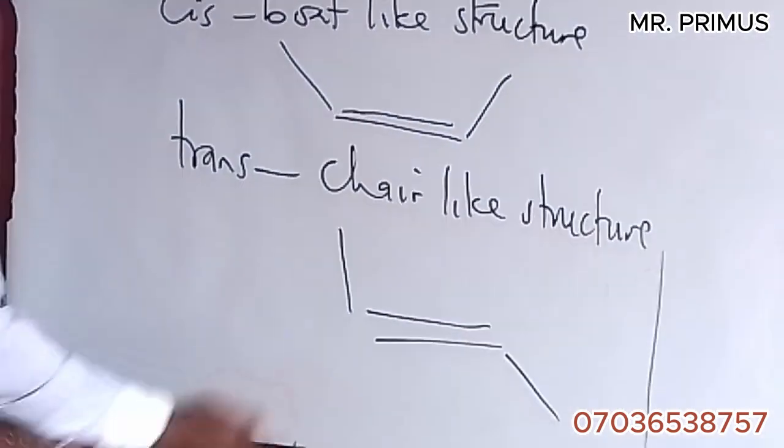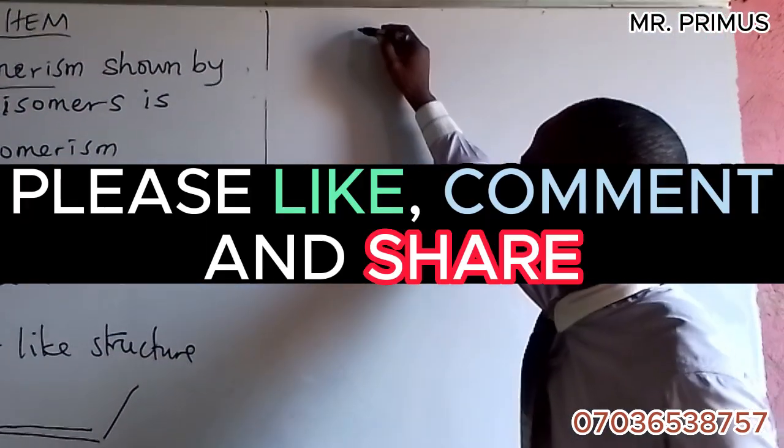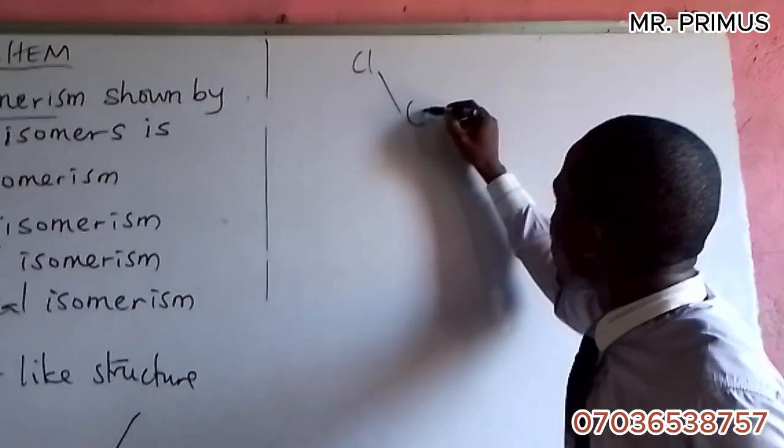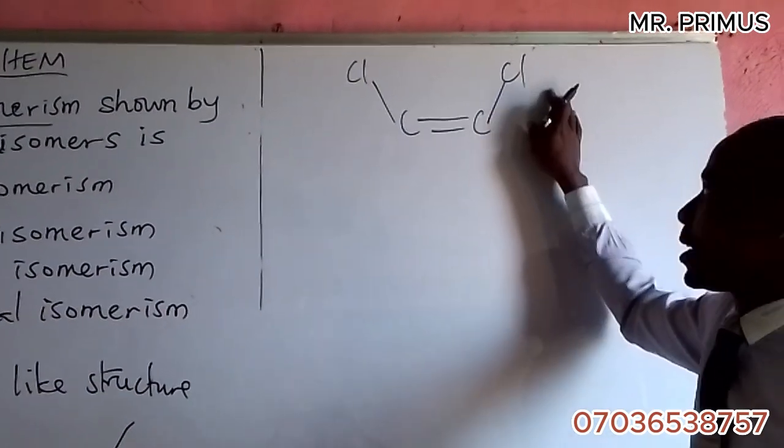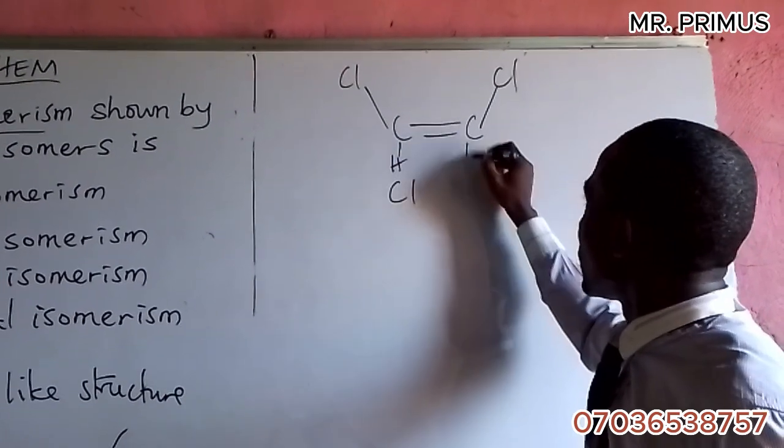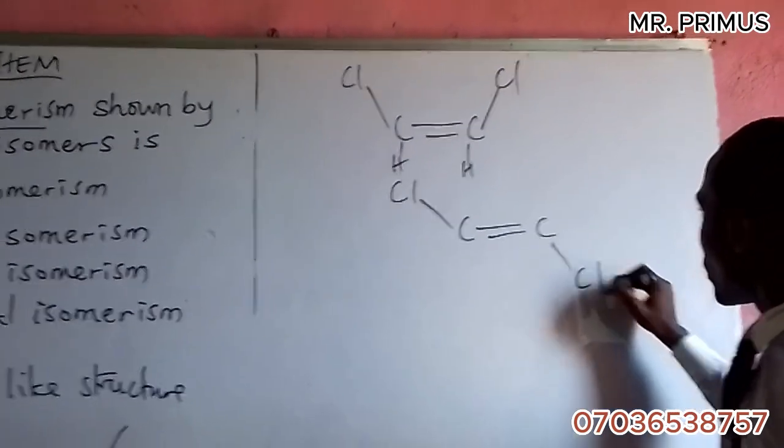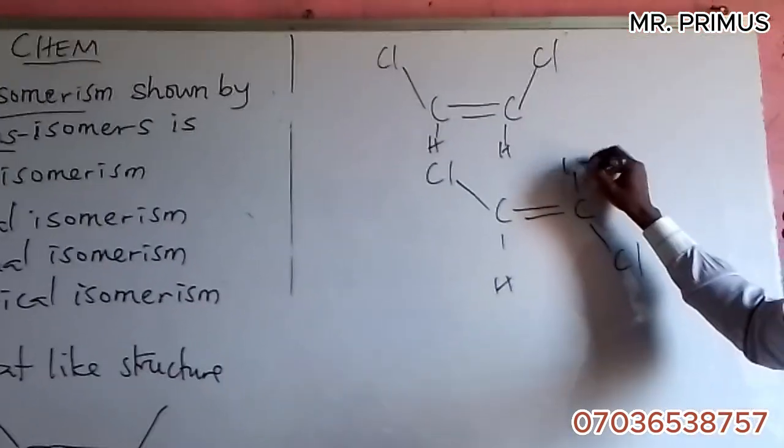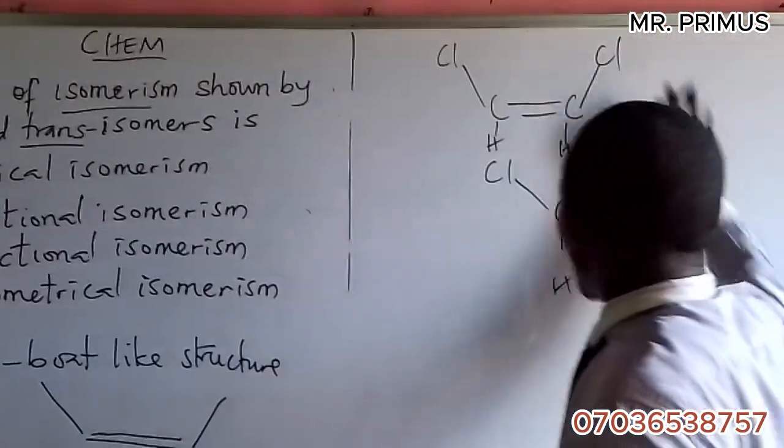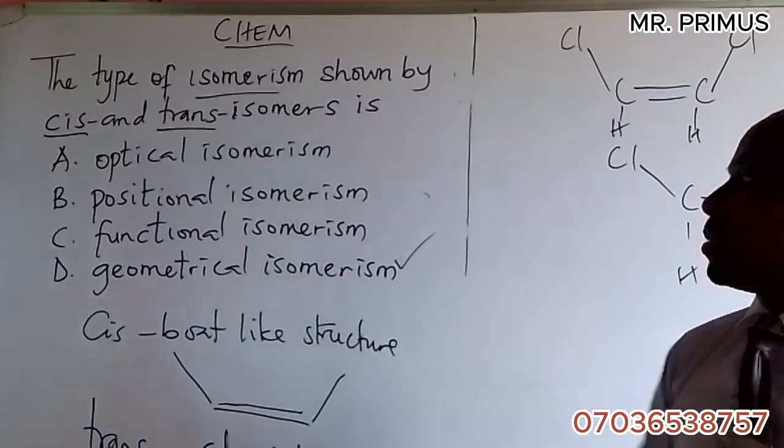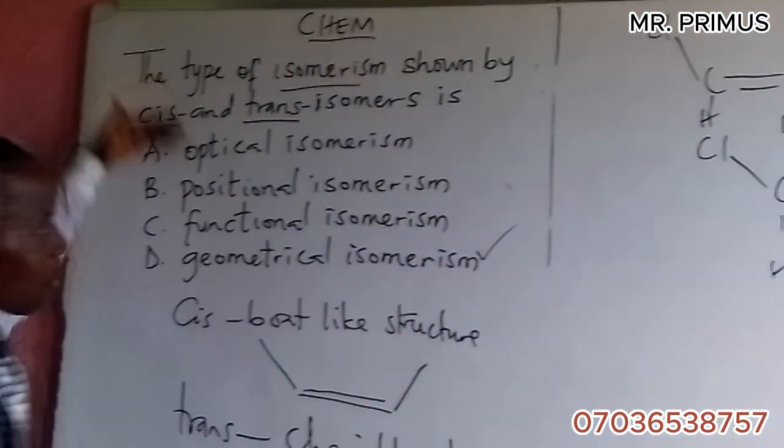We can have something like this - this is cis. You can put hydrogen and chlorine. This one is trans - you can put hydrogen on opposite sides. This is cis-trans, and when it involves this form of structure, we call it geometrical isomerism.